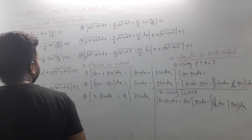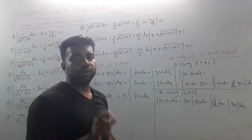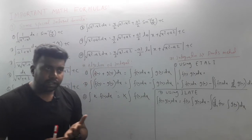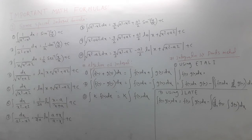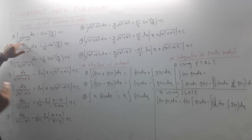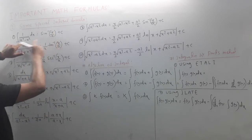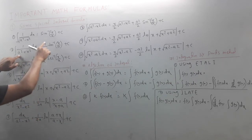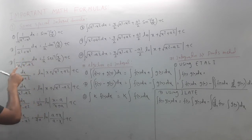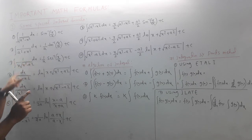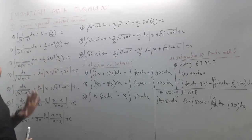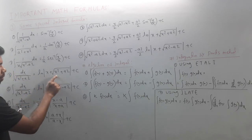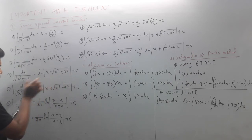The next question is the special integration formula. The general formula is called a special formula. For dx/(x²+a²): the formula is (1/a)·tan⁻¹(x/a) + c. For dx/(x·√(x²-a²)): the formula is (1/a)·sec⁻¹(x/a) + c. For dx/√(x²+a²): the formula gives ln|x + √(x²+a²)| + c.